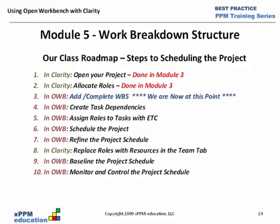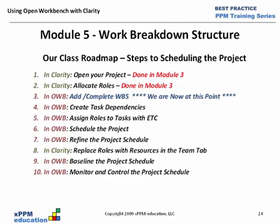Following this module, item four is creating task dependencies in Workbench. Item five is assigning roles to tasks with ETCs in Workbench. Item six, we schedule the project in Workbench. Item seven, we review and refine the schedule in Workbench. Item eight, we go back to Clarity to work with the resource manager and replace roles with resources. Item nine, back in Workbench — or in Clarity — we baseline the project. And item ten, we get into the monitoring and controlling process, which is an ongoing weekly activity.